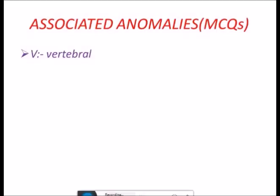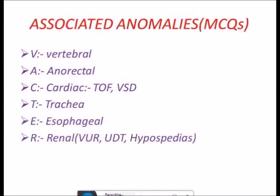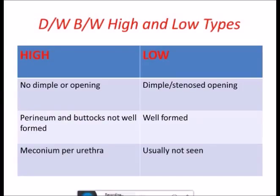Some associated anomalies are called VACTERL anomalies — this is also an MCQ question. V for vertebral anomalies, A for anorectal anomalies, C for cardiac anomalies (in which Tetralogy of Fallot and ventricular septal defects are more common), T for tracheal anomalies, E for esophageal anomalies, R for renal anomalies (in which radial ray syndrome is significant).